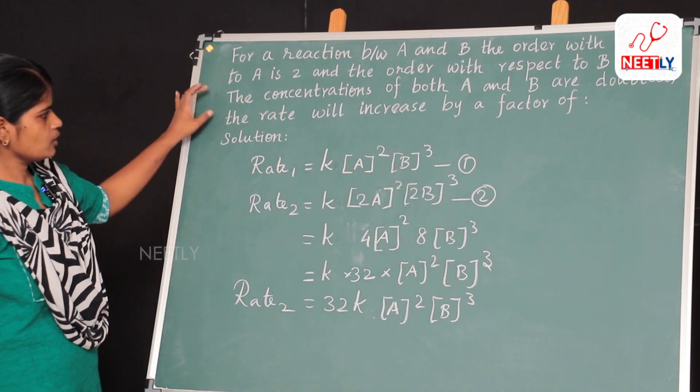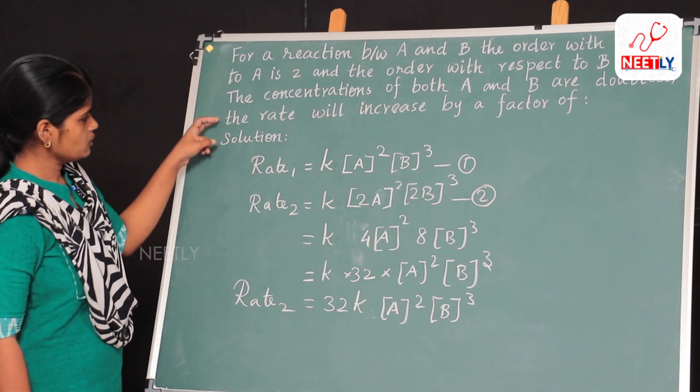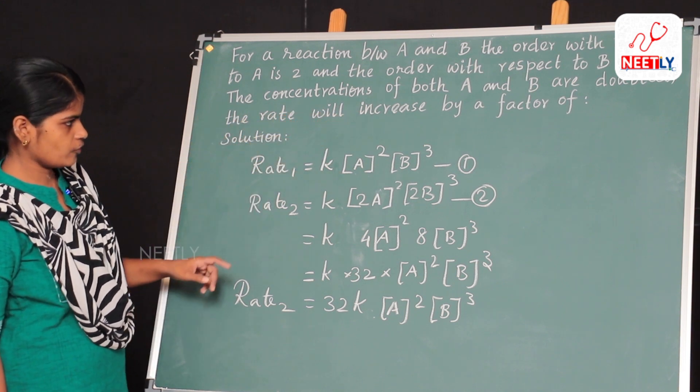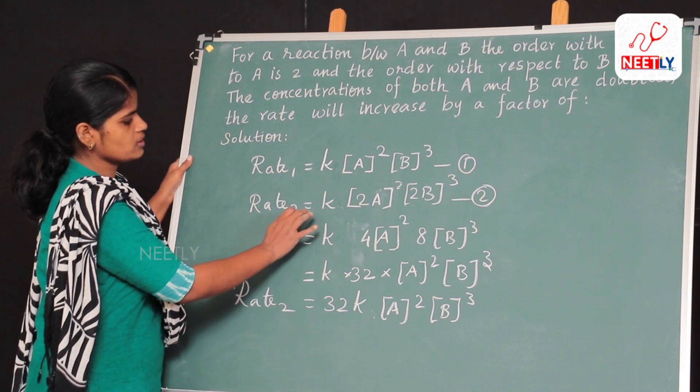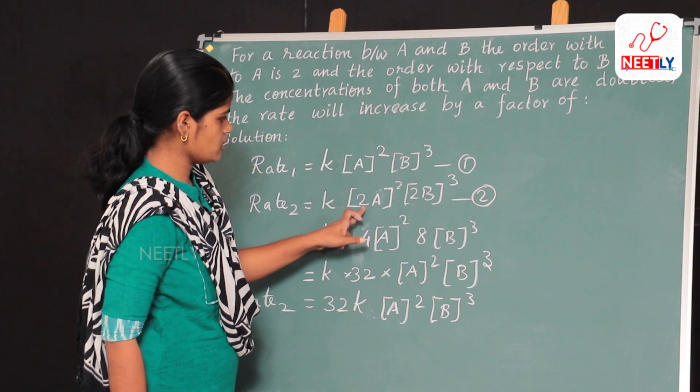And it is asked to find out when the concentrations of both A and B are doubled, the rate will increase by a factor of. So rate 2 is equal to K and the concentrations of A and B are doubled, so that it is doubled here.